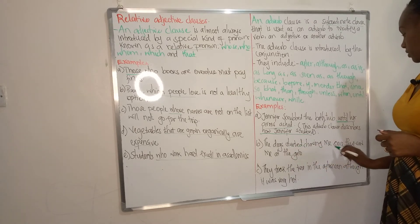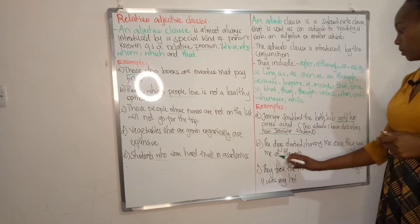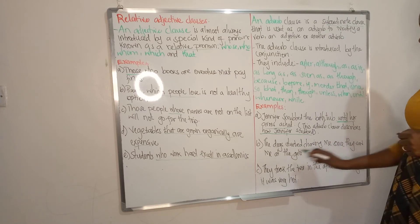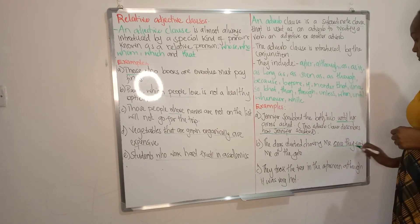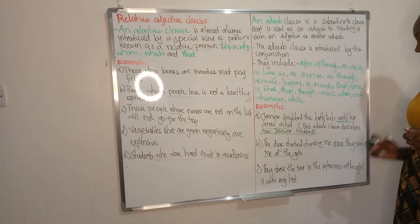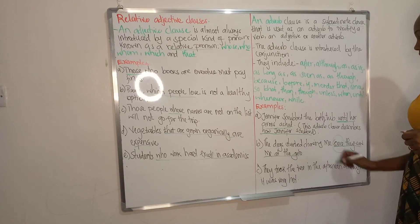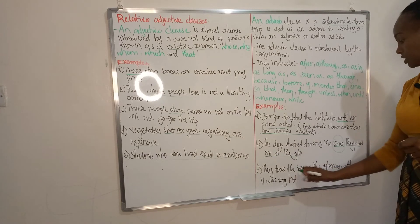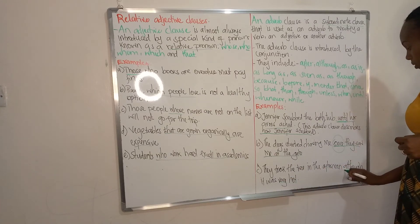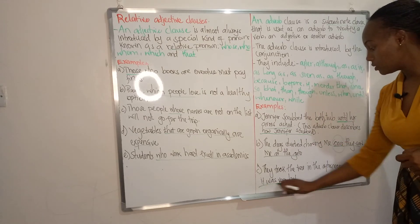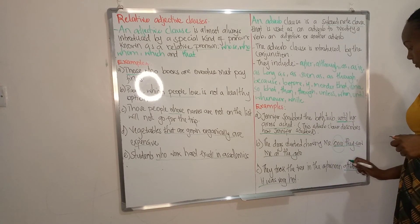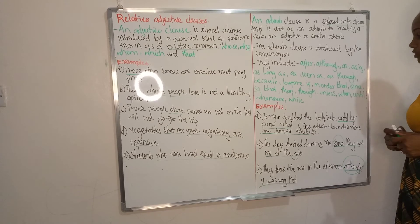'The dogs started chasing me once they saw me at the gate.' 'Once they saw me at the gate' is our adverb clause, introduced by 'once.' 'They took the tea in the afternoon although it was very hot.' 'Although it was very hot' is our adverb clause, introduced by the conjunction 'although.'